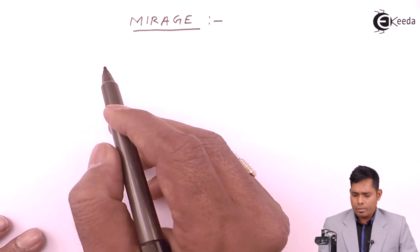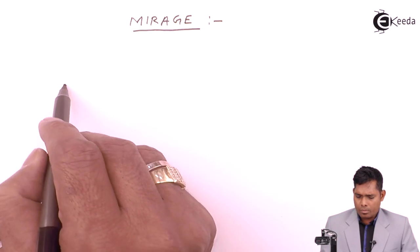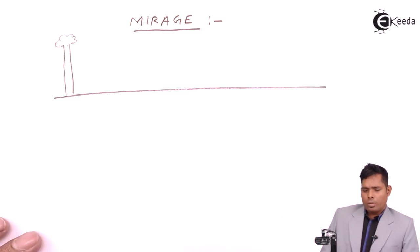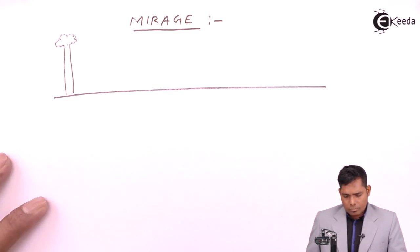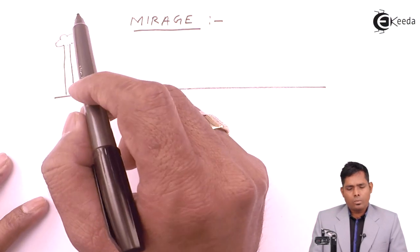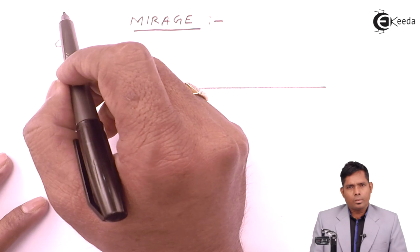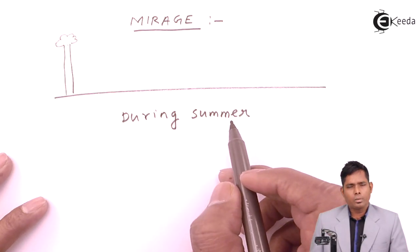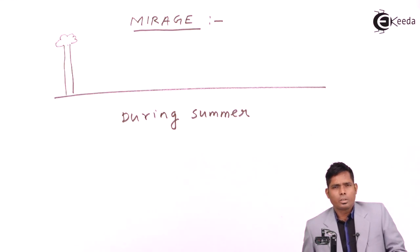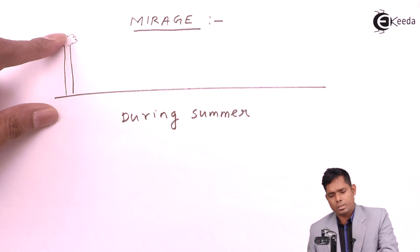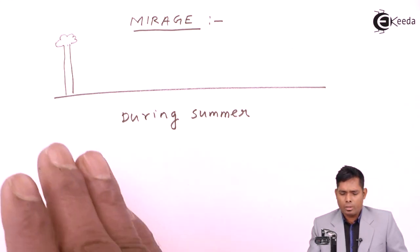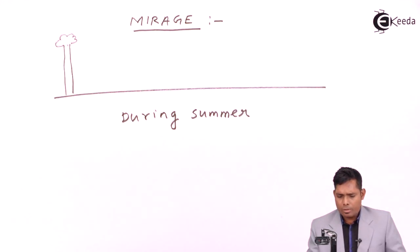When we have an object like a tree, during summer this phenomenon is observed. When light from the top of this object moves towards the ground, it encounters layers of air that have variable temperatures.